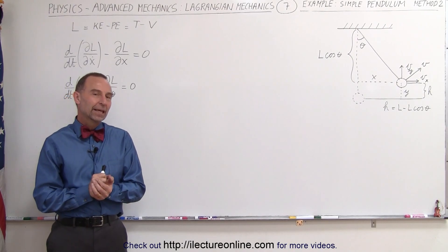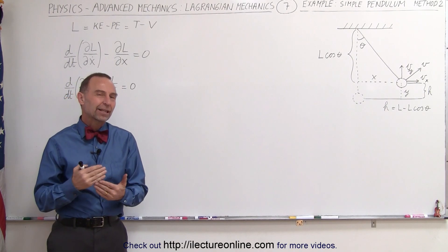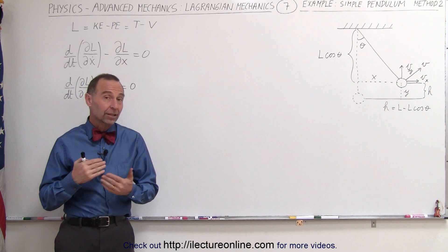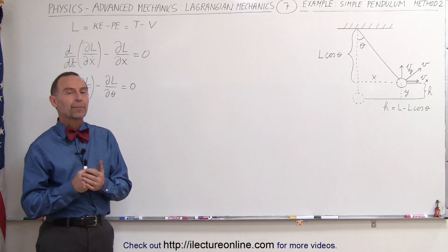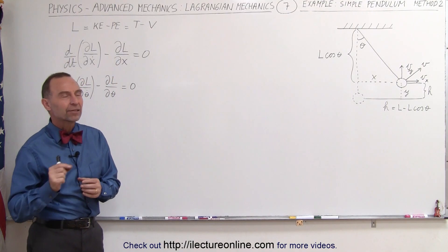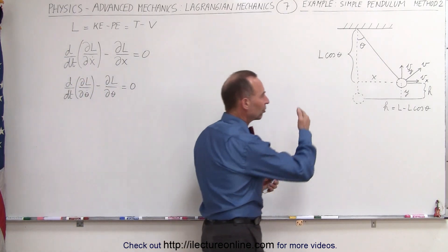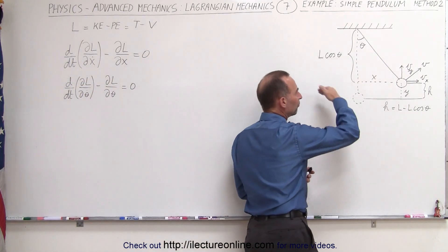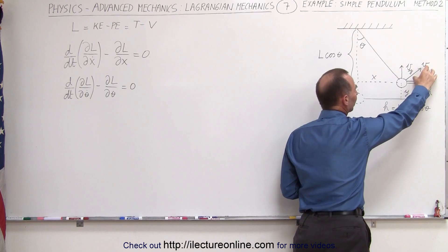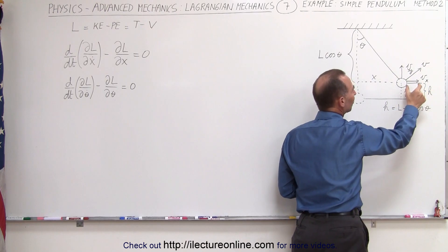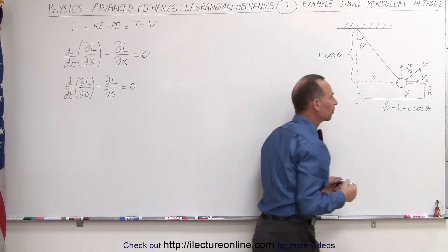Welcome to our lecture online. In order to show you the versatility of this method — the Lagrangian method — we're going to do the pendulum example again, but in a different fashion. Notice here that if the pendulum is swinging back and forth, it has a tangential velocity called v, but we can separate that velocity into its x and y components.